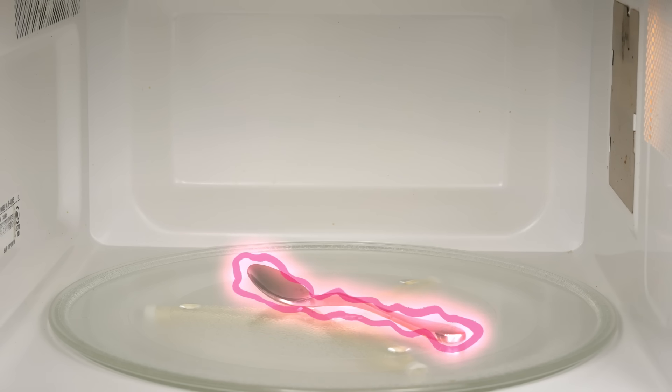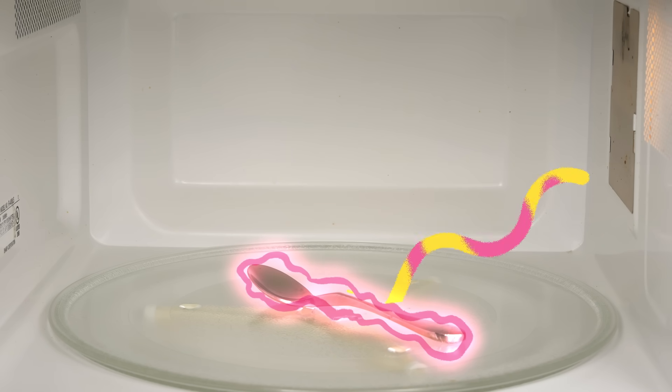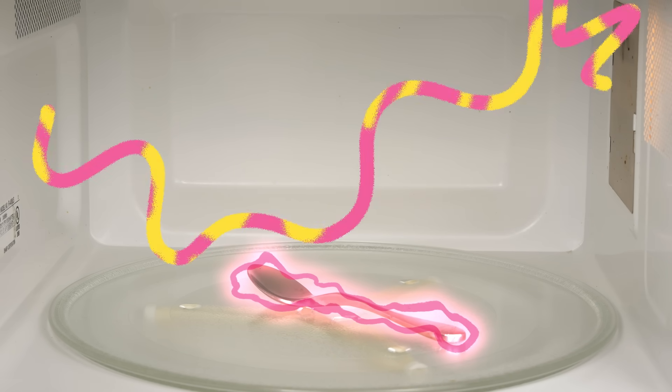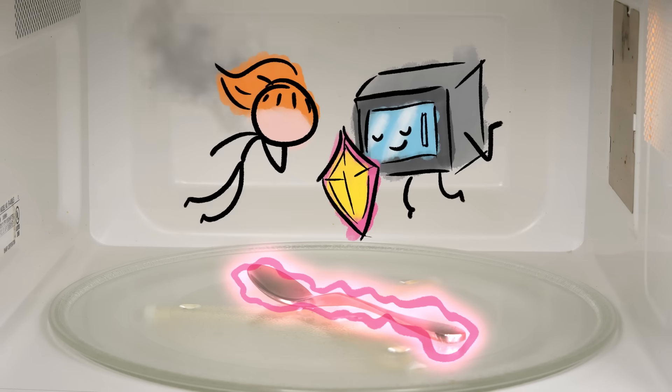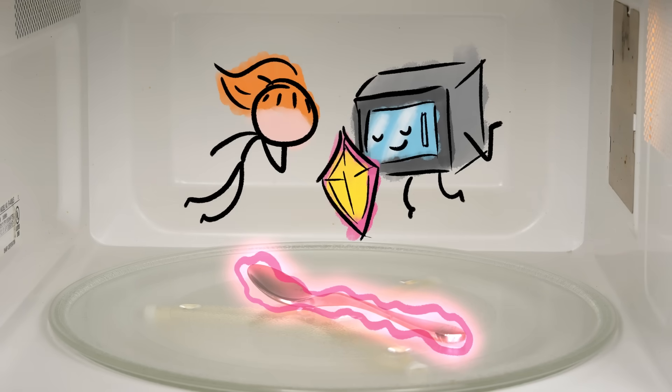You might have heard that additional metal in a microwave, especially without any food in there to absorb the energy, will bounce the energy around so much that it could actually damage the magnetron. And while that is possible, microwaves today have better protection against this kind of reflection than they used to.